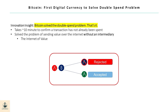Blockchain redefines trust in the digital age. Traditionally, trust was established through institutions like banks. In blockchain, trust is established through cryptography — transactions and data are secured and verified using mathematical proofs instead of relying on a centralized intermediary. Each transaction is encrypted and linked to the previous one, creating a chain that is virtually tamper-proof. This is often described as a trustless environment, which doesn't imply a complete absence of trust, but rather a shift from centralized institutions to decentralized algorithmic consensus and cryptographic security.